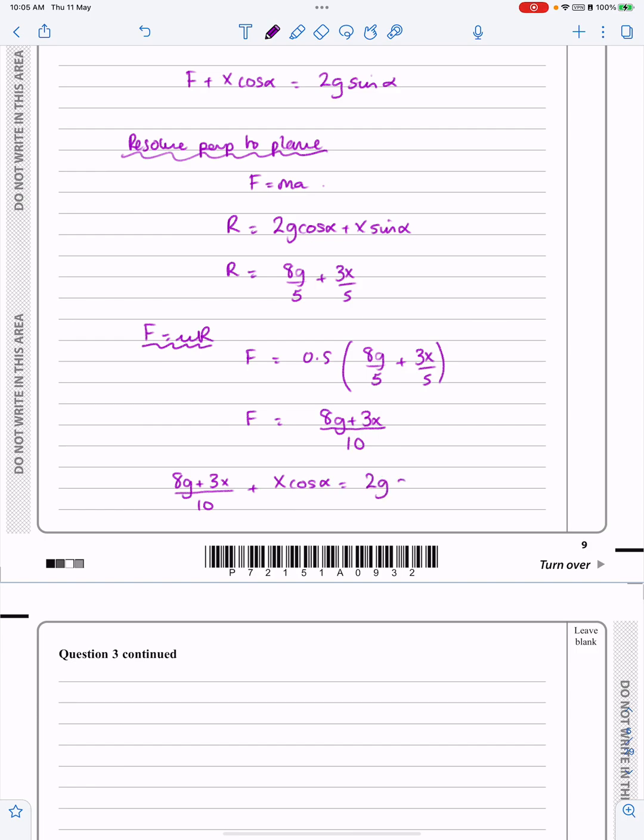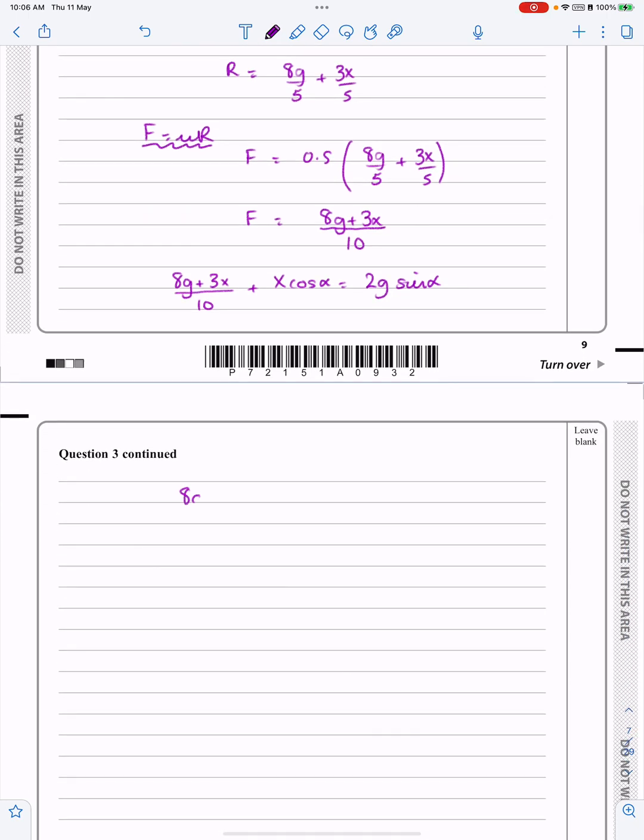Equals 2g sin alpha. Now let's put in our sin alpha and our cos alpha. We're quite close to the answer now, so we've got 8g plus 3X over 10 plus four-fifths X. Just be careful when you're doing all these things—keep jumping backwards and forwards to make sure you're getting the right fractions, that we're not making any silly calculating errors here.